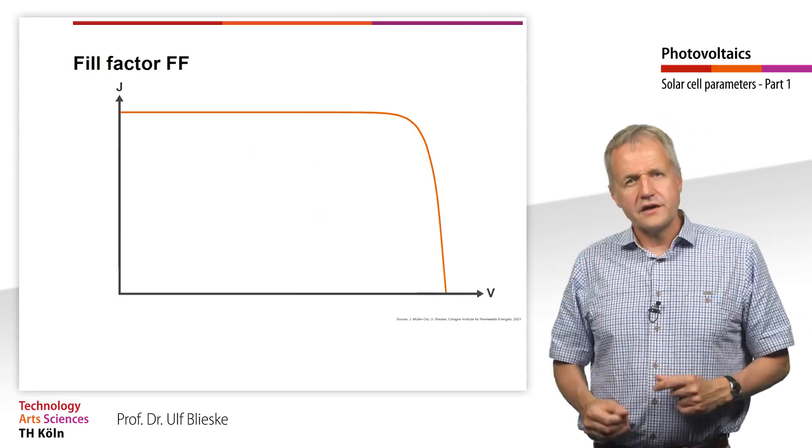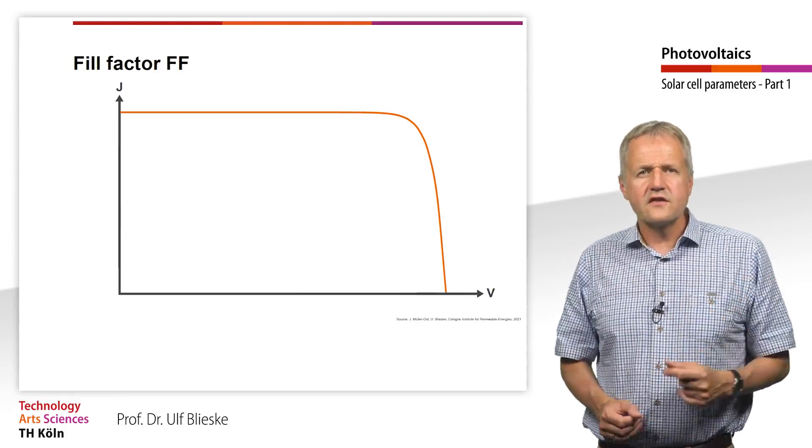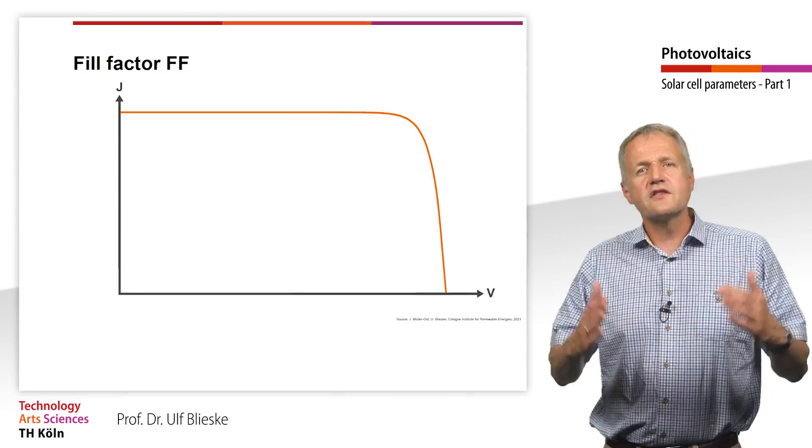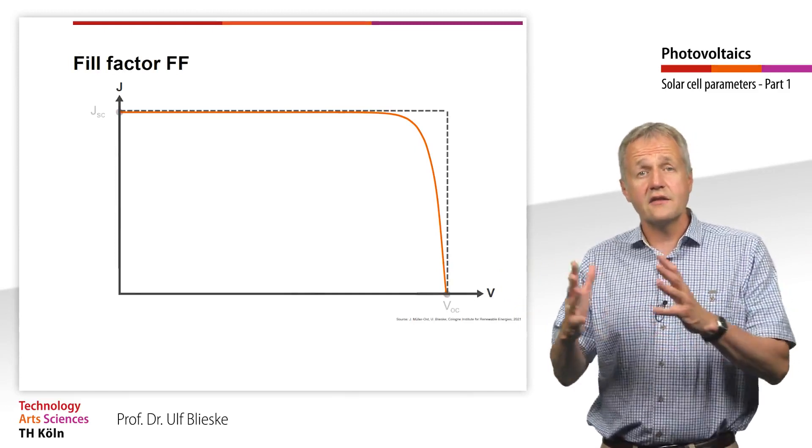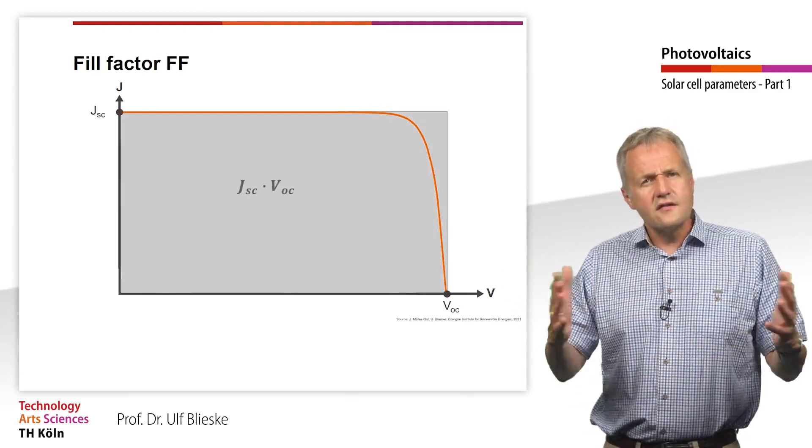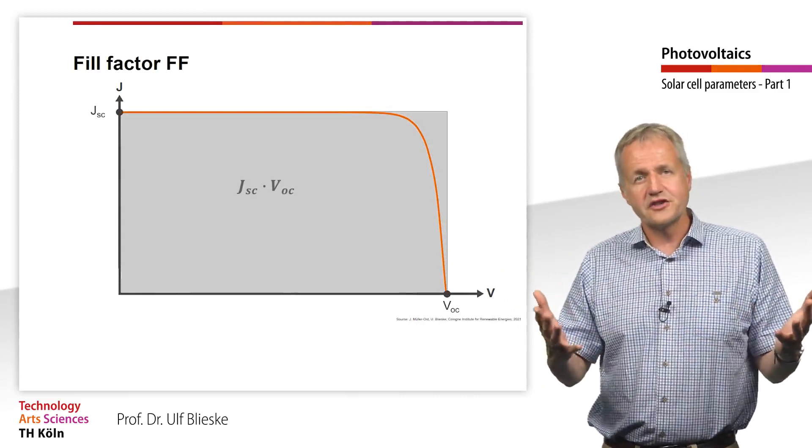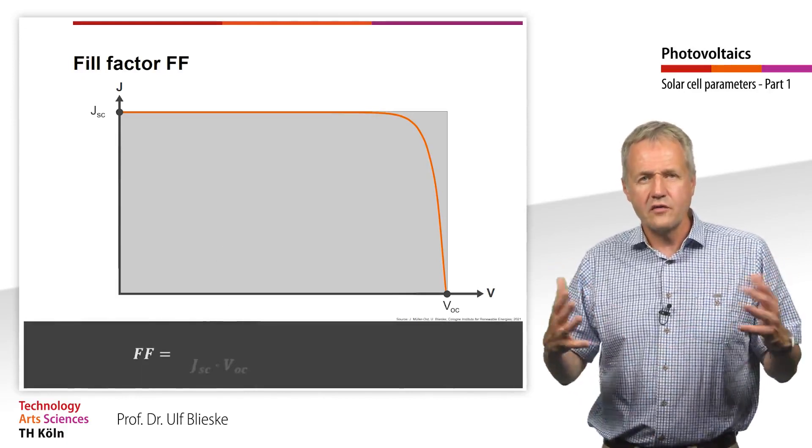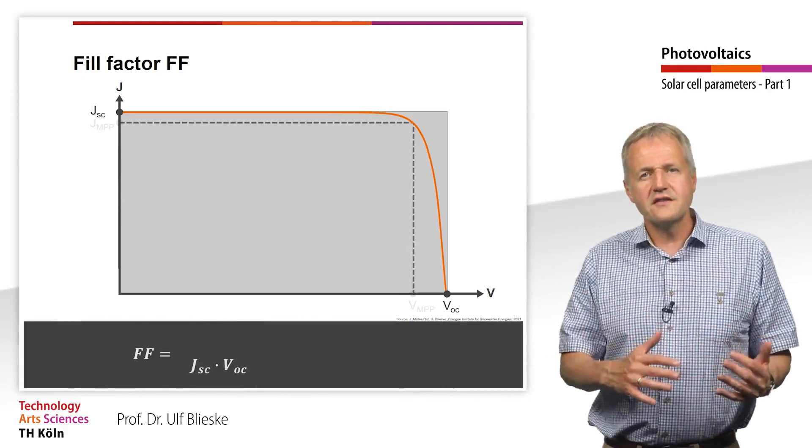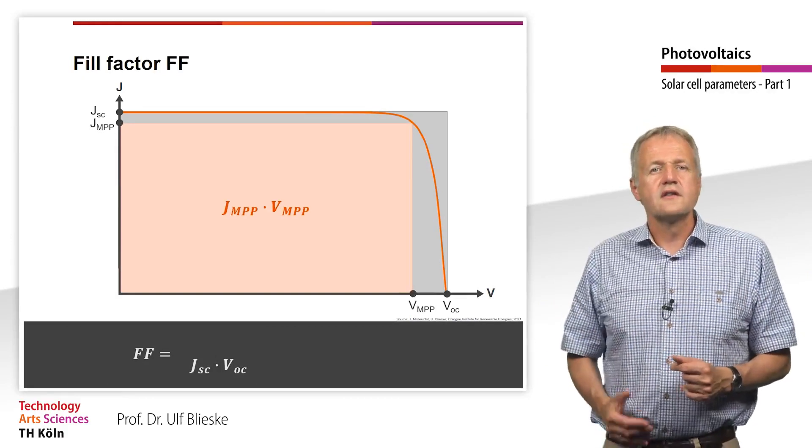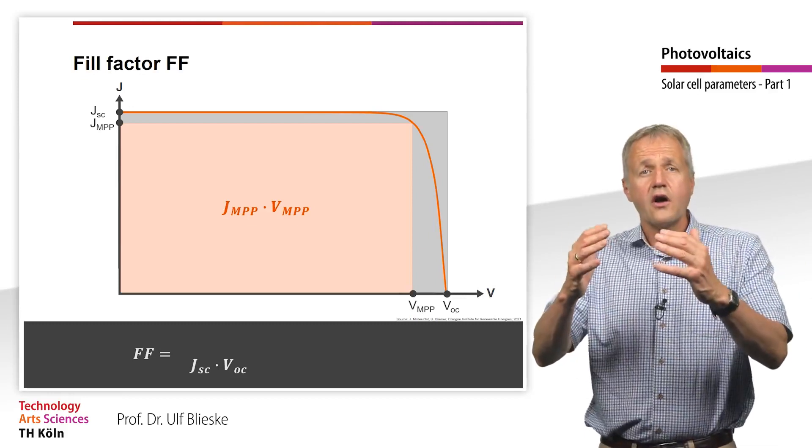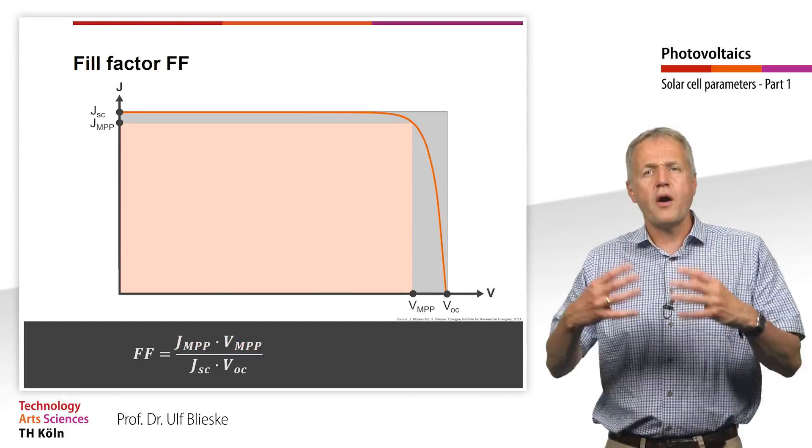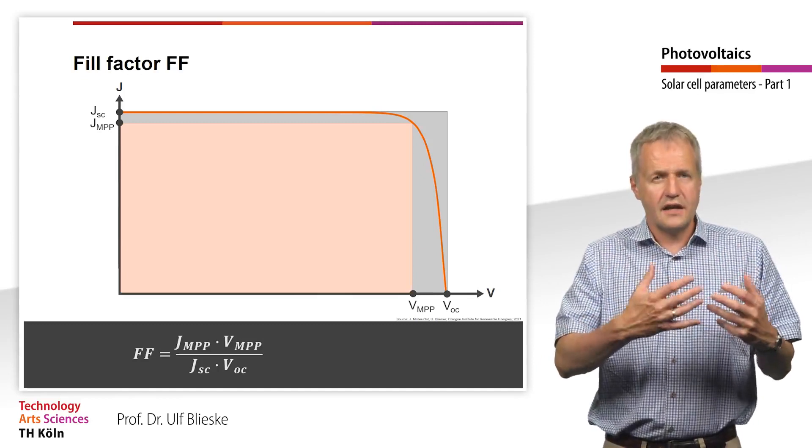We now introduce the fill factor. To do this, we first consider the theoretical maximum power density, which is the product of the short circuit current density and the open circuit voltage. Since these two operating points can never occur simultaneously, this is a theoretical value. Next, we consider the actual maximum power, which is the product of current density and voltage at MPP. The fill factor is defined as the ratio of these two powers. It therefore indicates how close the maximum power of a solar cell is to the theoretical and never achievable maximum.